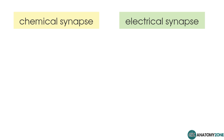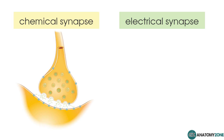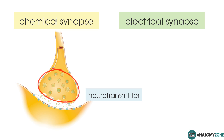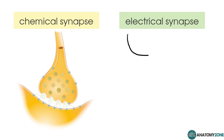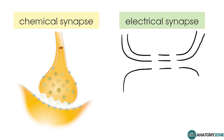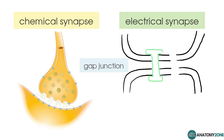In this tutorial, we're going to take a look at the chemical synapse. In a chemical synapse, you've got a substance called neurotransmitter which is released from the presynaptic neuron and diffuses across a small gap to bind to receptors on the postsynaptic neuron. An electrical synapse, on the other hand, actually has a direct connection between the two cells, called the gap junction.